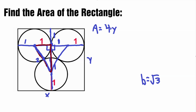We got that our b is square root of 3. However, we must remember that this b value is not the whole y side that we want. The y side is this b value — square root of 3 — plus the radius here, which is 1, and 1 here, so that is plus 2. Our y value is equal to square root of 3 plus 2.